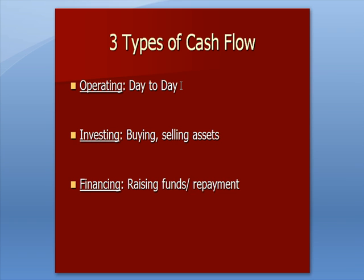So if you're Levi's manufacturing and selling blue jeans, the cost to buy your raw materials, pay labor to produce them, pay somebody to drive a truck to ship them — all those costs, and the cash inflow from being paid for your blue jeans — that is cash flow from operating.